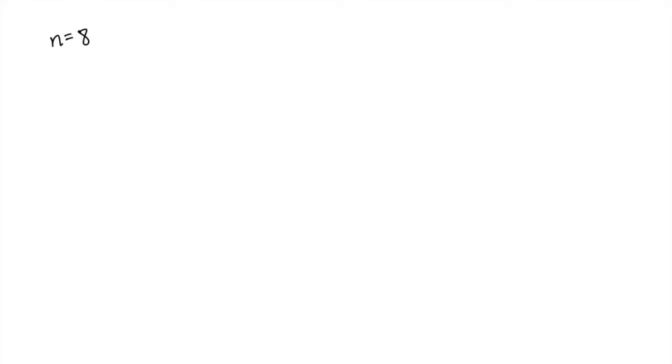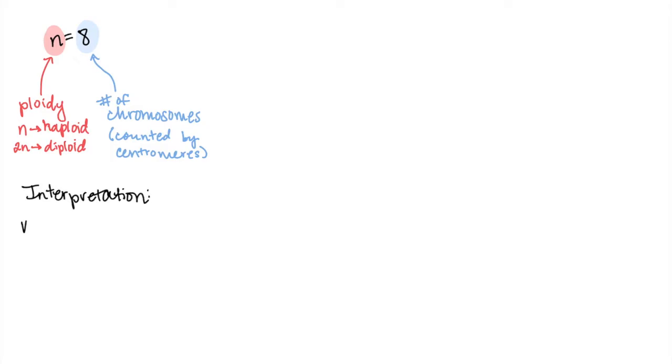On one side of the equation, you'll have the ploidy, which refers to if the cell is haploid or diploid. In the case of n equals 8, the cell is haploid, which we know because it has n and not 2n. And on the other side of the equation, this is the amount of chromosomes in the cell. The number of chromosomes is counted by the centromeres. So this equation means that when a cell is haploid, then it will have 8 chromosomes.